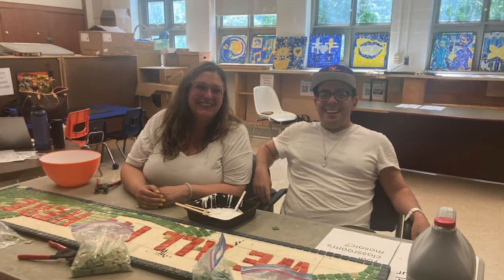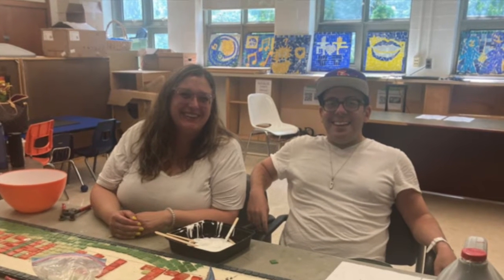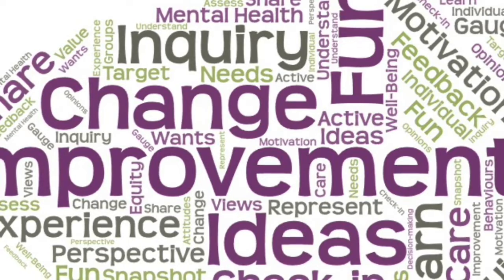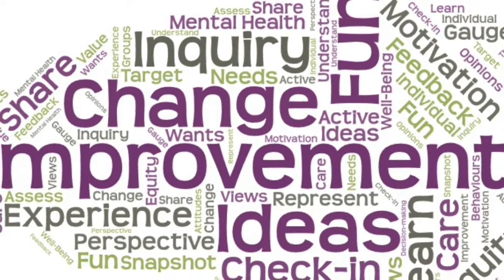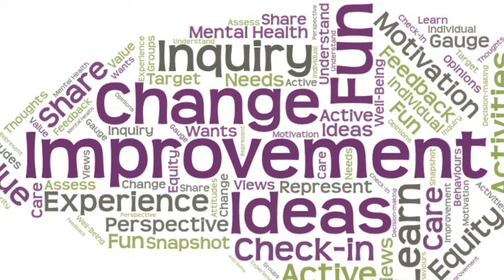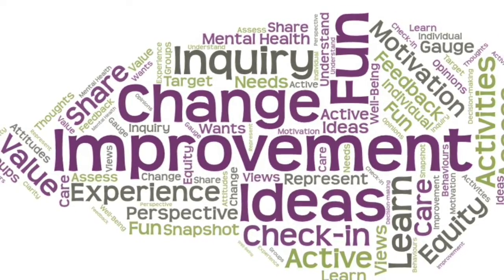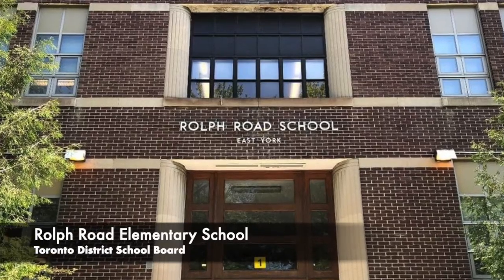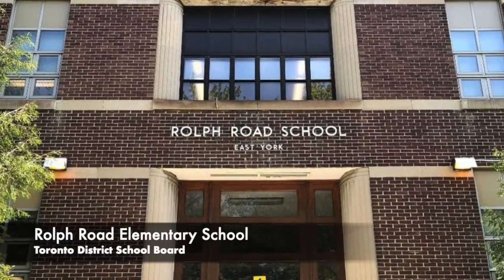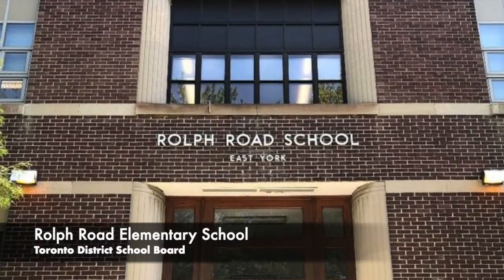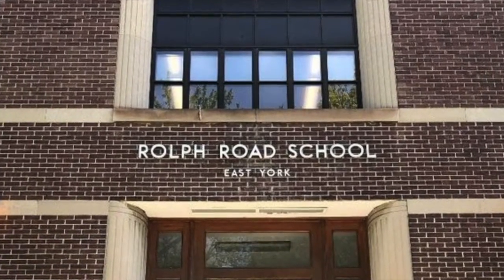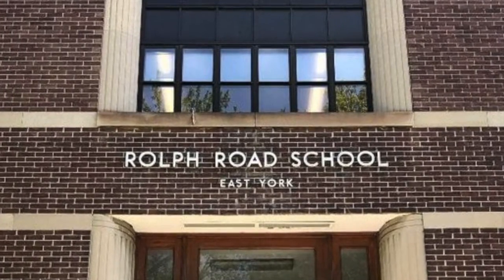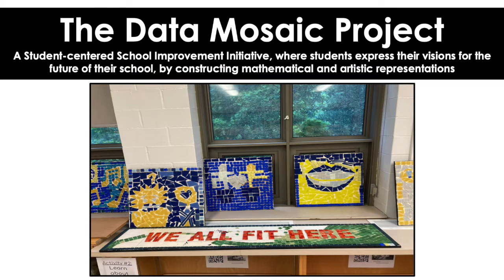This big school improvement initiative was designed to involve every single staff and student at our school. The data mosaic project was led by myself and the amazing educator Alexandra Stefanoff in our roles as co-chairs at the school. The school improvement process starts with working together to identify measurable goals based on the specific needs of learners, encompassing student achievement, equity, and student well-being. At Ralph Road Elementary in Toronto, Canada, our goals include amplifying student voices, providing more leadership opportunities, applying math to solve real-world problems, and using art to make learning more accessible. We designed the data mosaic project to simultaneously contribute to these goals and gather data to tell us how close we are to achieving them.